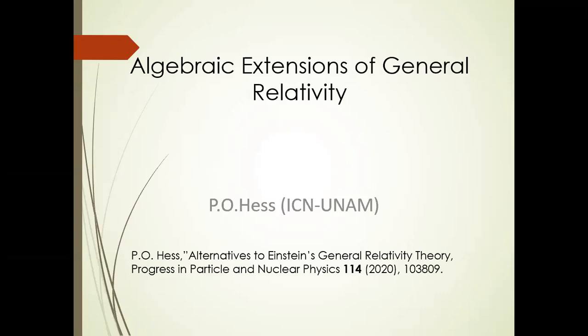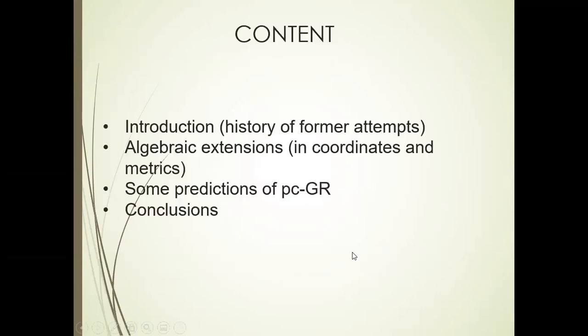Thank you very much. Part of which I will present here is published in this review article that just came out in focus in particular nuclear physics. The content of the talk will consist of the following. First, I will give an introduction about the history of attempts to extend general relativity from Born, Einstein and others. I will concentrate on algebraic extension, which means that coordinates and all the matrix are extended from real quantities to something more complicated. Then I will give some predictions of pseudo-complex general relativity. This is a theory I will discuss at the end. It's one type of algebraic extensions. And then conclusions will be drawn.